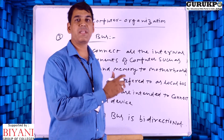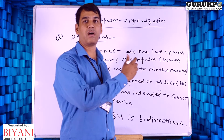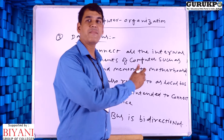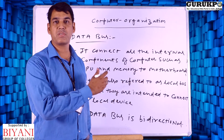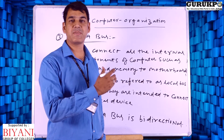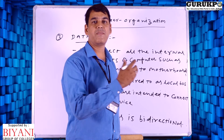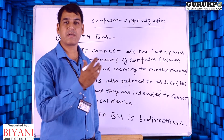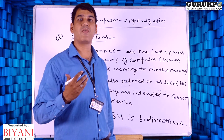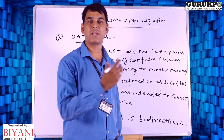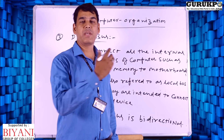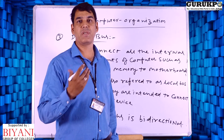In the case of the address bus, we discussed that it is unidirectional. Unidirectional means we can transfer data from one place to another in one direction only, whereas the data bus is bidirectional.